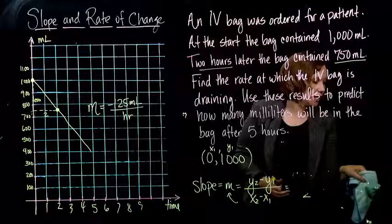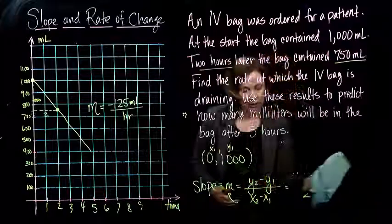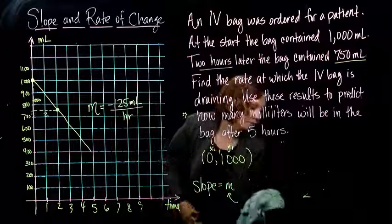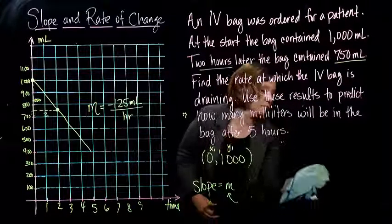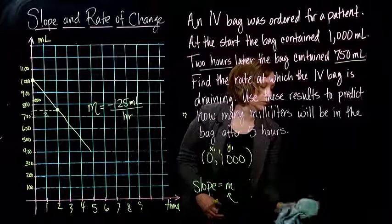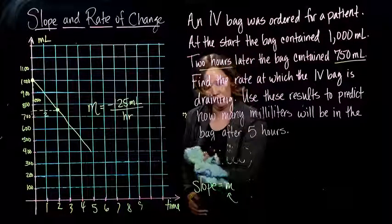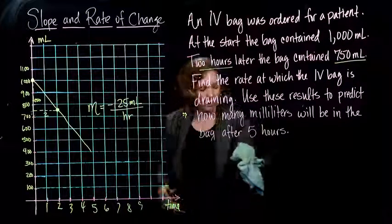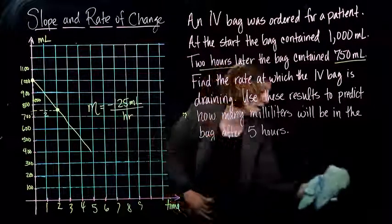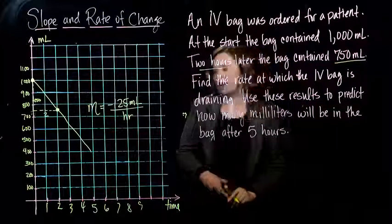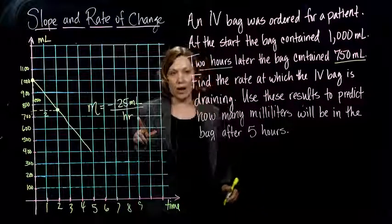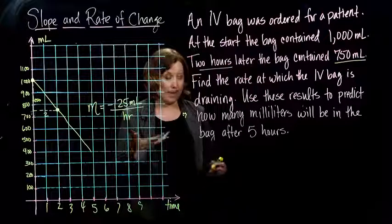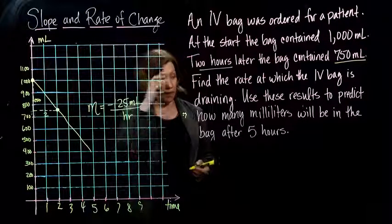So now we need to predict how many milliliters will be left in the bag after five hours. So if we're draining 125 milliliters in one hour, we want to know how many we've gone down in five hours.